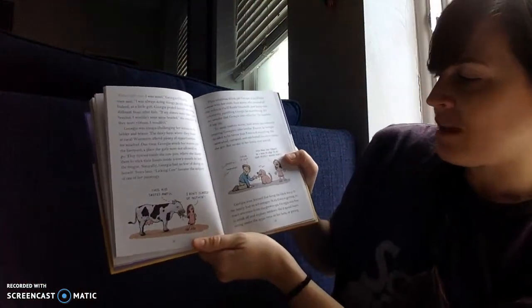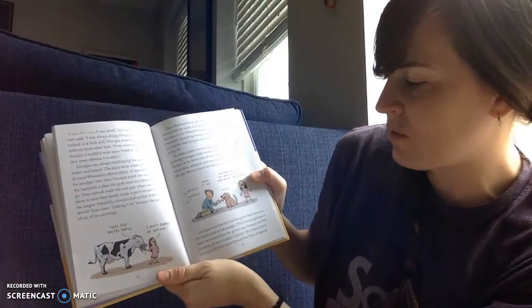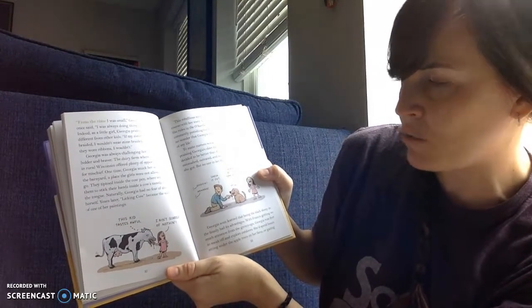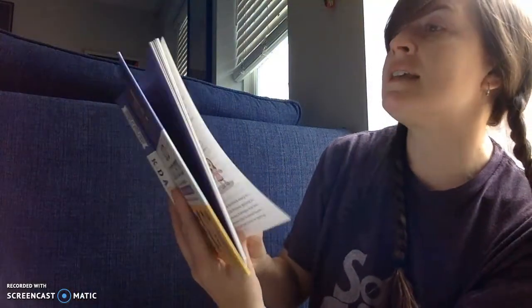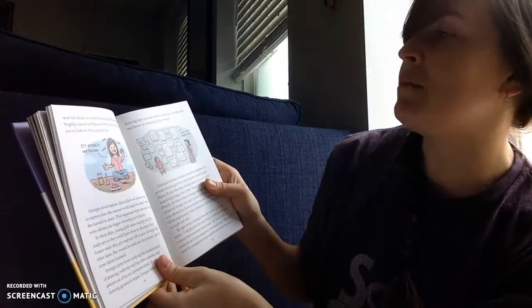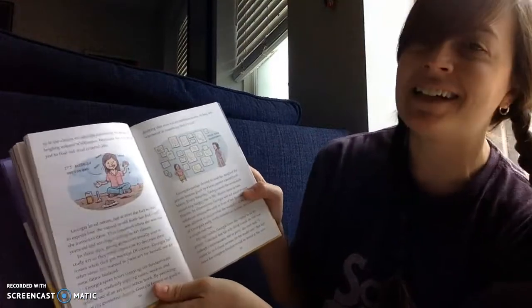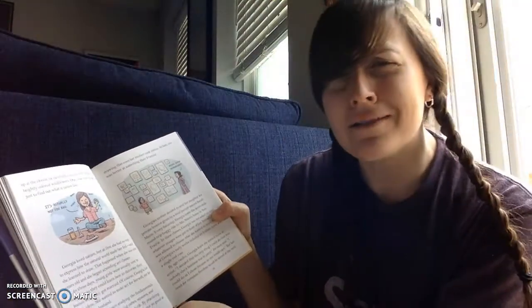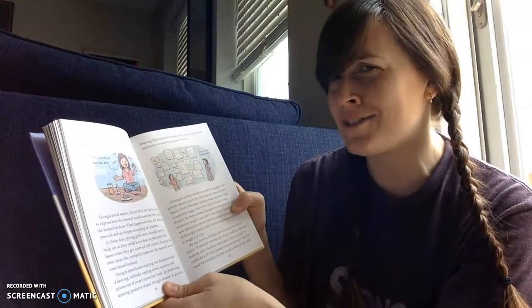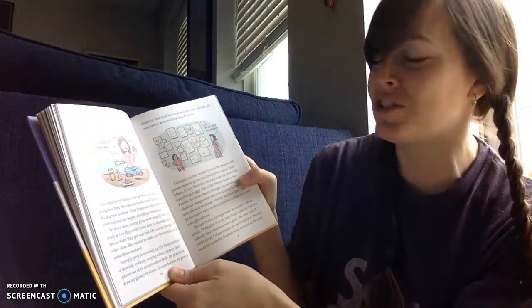Georgia soon learned that being the black sheep in the family had its advantages. With Francis getting so much attention from the grown-ups, Georgia was free to sneak off and explore outdoors. She'd spend hours sitting under the apple trees on her farm, or gazing up at the clouds, or carefully examining the petals of brightly colored wildflowers. One time, she even ate dirt just to find out what it tasted like. It's actually not too bad. And I've heard that people with iron deficiencies kind of crave dirt to get the iron out of the dirt. I used to work with a lady back in Georgia who confessed her dirt-eating love because of her iron deficiency.